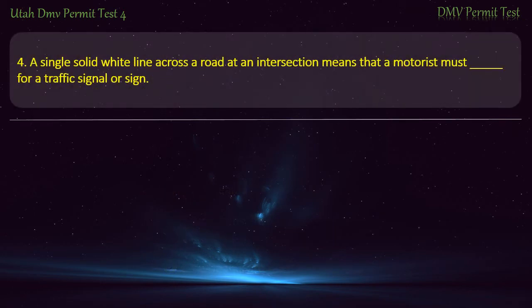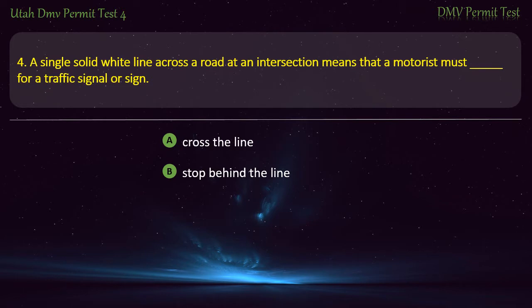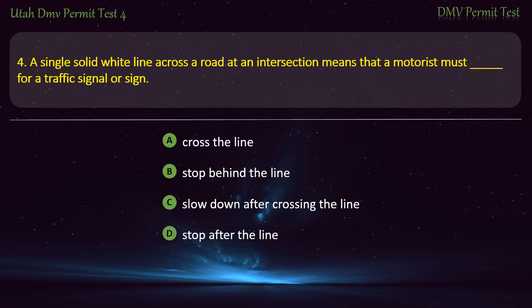Question 4. A single solid white line across a road at an intersection means that a motorist must: Stop for a traffic signal or sign; Cross the line; Stop behind the line; Slow down after crossing the line; or Stop after the line? Answer: Stop behind the line.